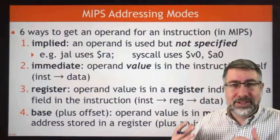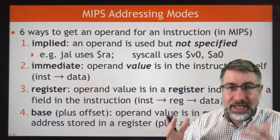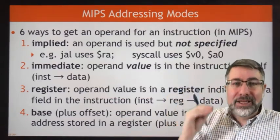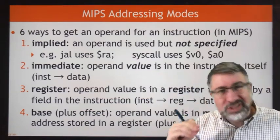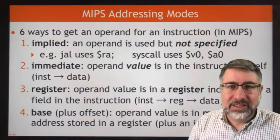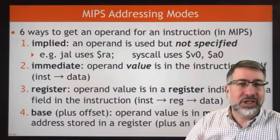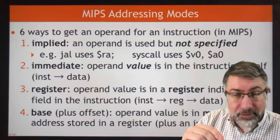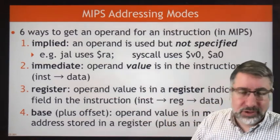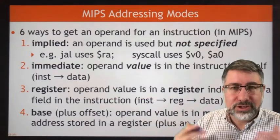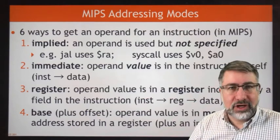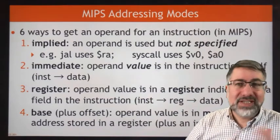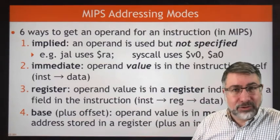Jump and link is another example. When jumping to a new location, before going, it stores the current value of the program counter in the return address register so you can use it to get back when done. We don't say 'jump and link RA' — we just say jump and link. The return address register RA is implied in the execution of that instruction. An implied addressing mode means we don't have to say it — just by the nature of the instruction, we know that value will be accessed.